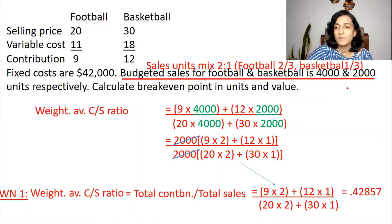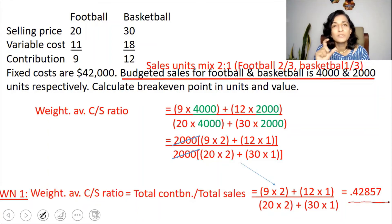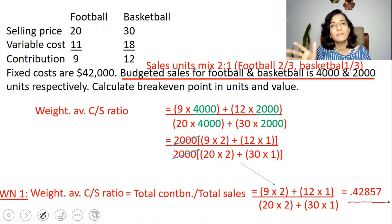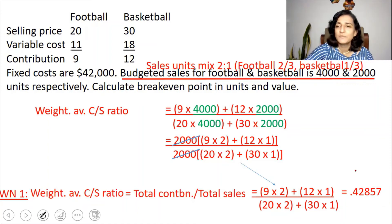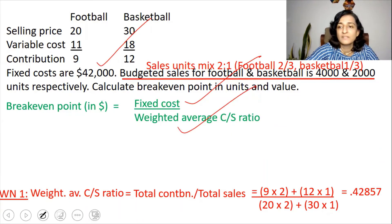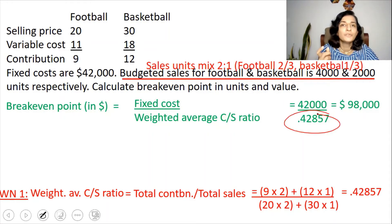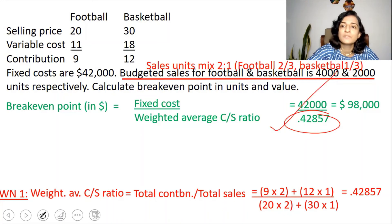The weighted average C/S ratio works out to 0.42857. Always take 5 decimal places for the weighted average C/S ratio — rounding to 2 decimal places introduces rounding differences that could cause your final break-even answer to differ by $100–$200, which matters especially in multiple choice questions. Substituting: $42,000 ÷ 0.42857 = $98,000.